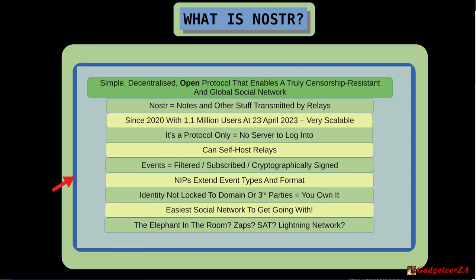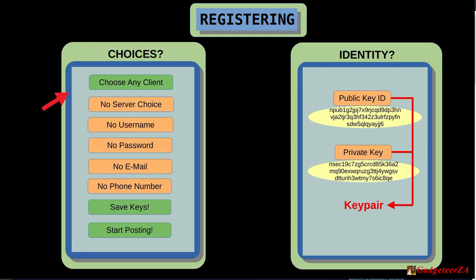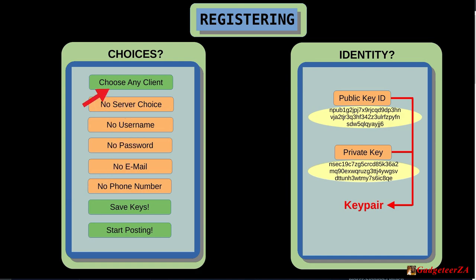Registering on NOSTR is a little different: you do not need to make any choice of server. People struggle with Mastodon's 'which instance do I join?' question because your identity is tied to a domain. With NOSTR there's no server to decide about, no username, no password, no email, no phone number or SMS required. The only thing you need to decide is which client you want to use.